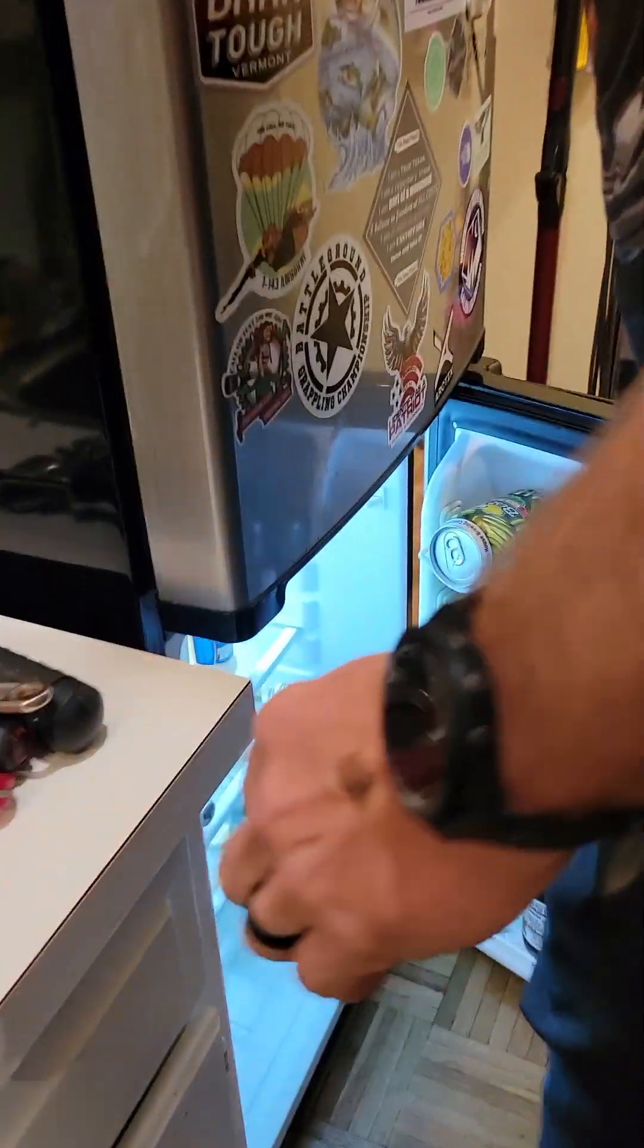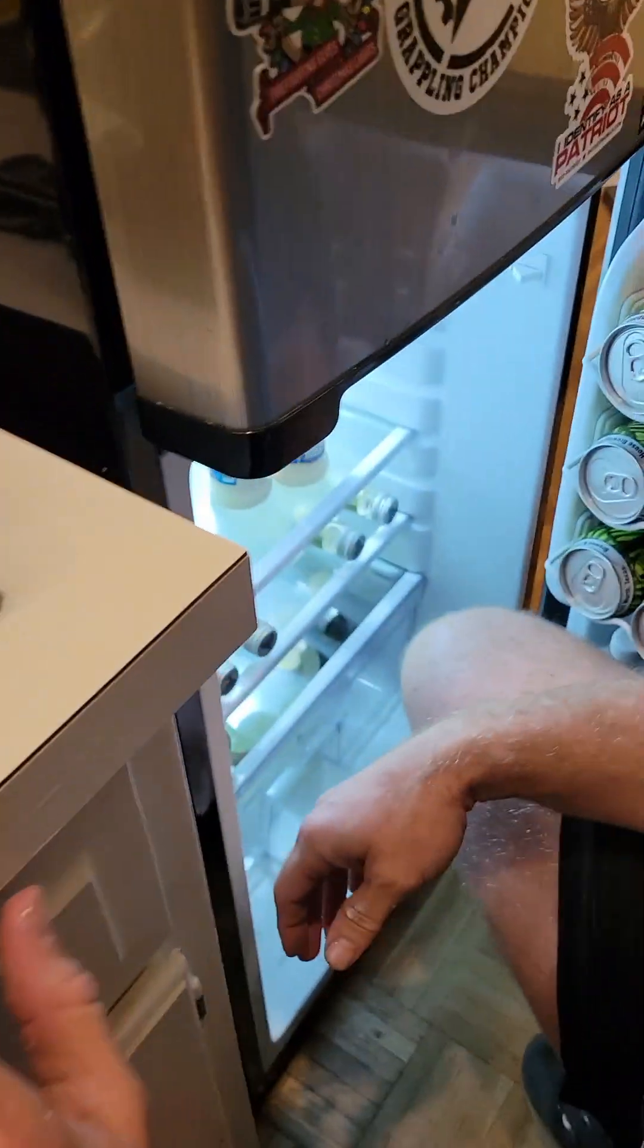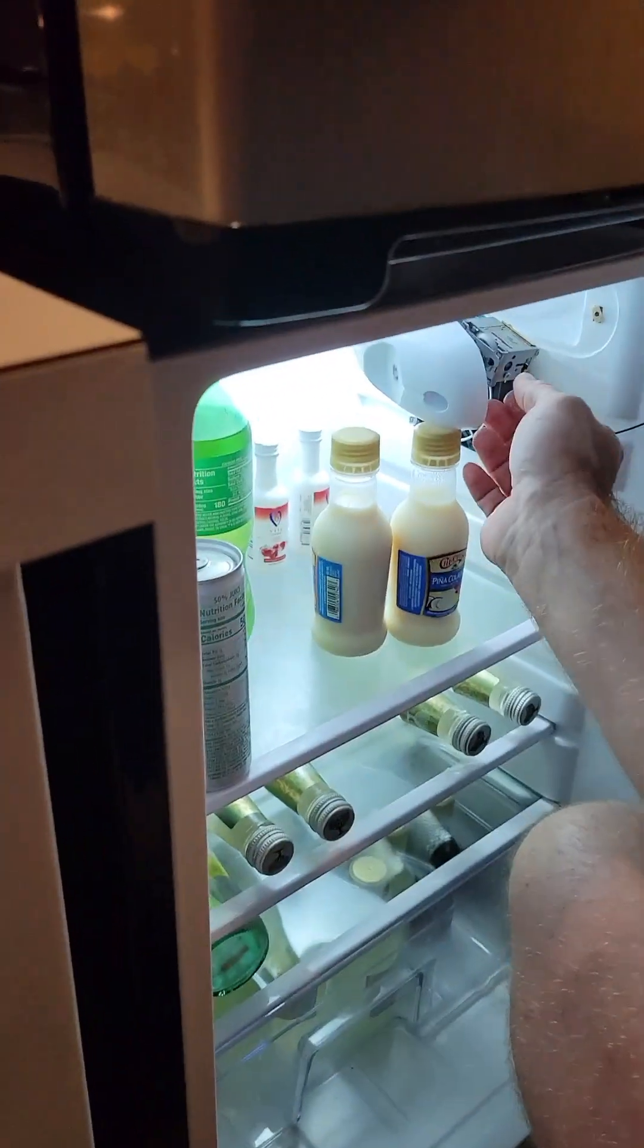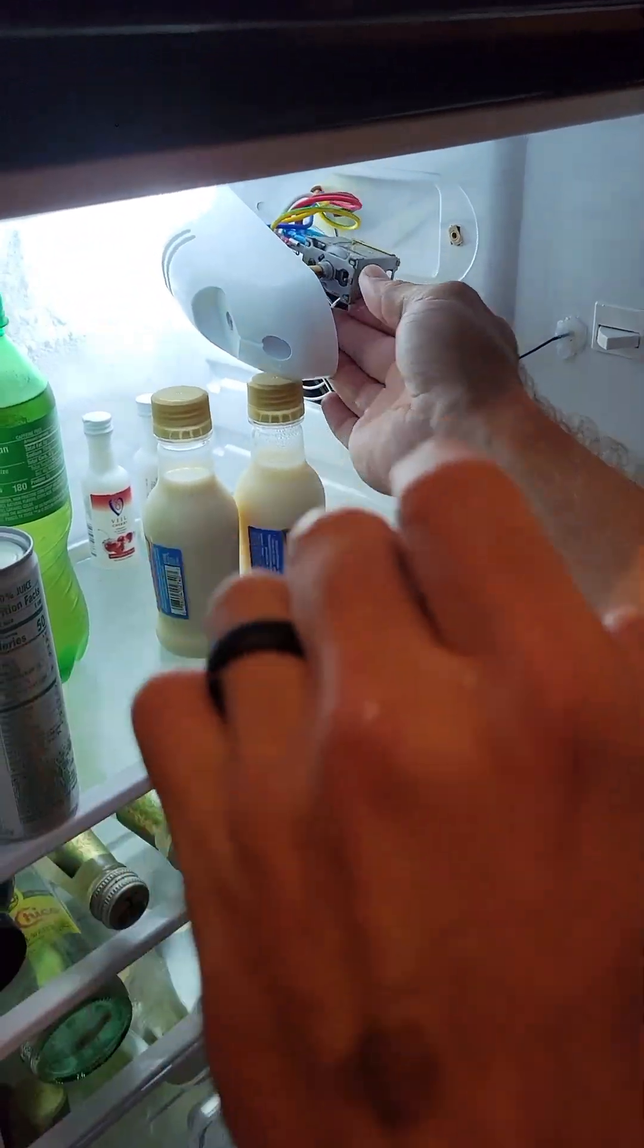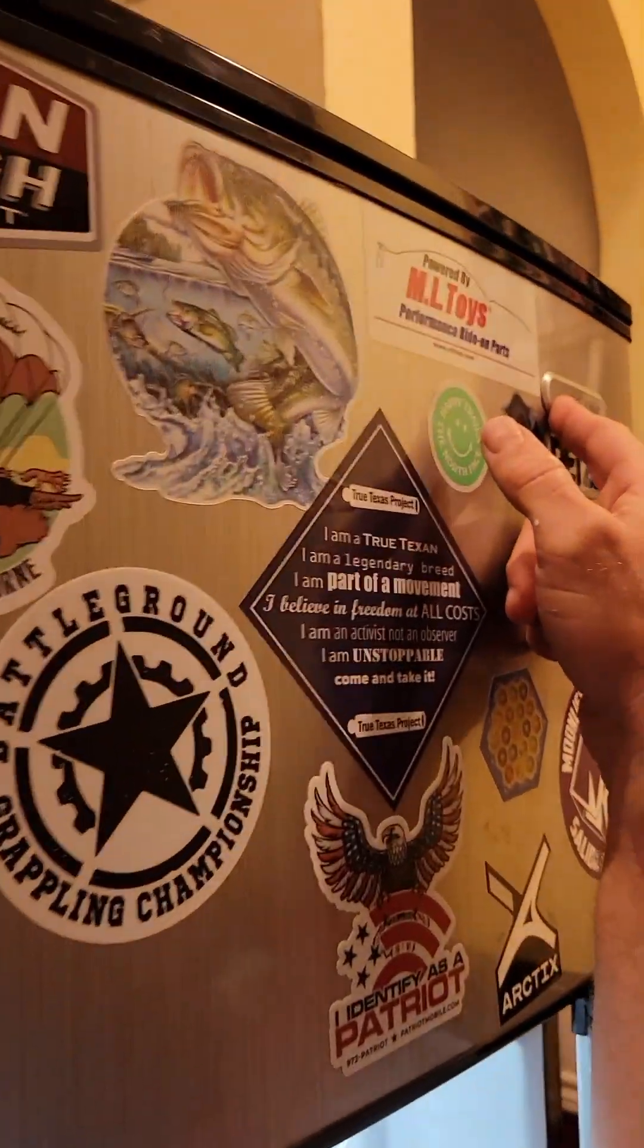Okay, so at the end of the last video, I said I would go into how this thermostat on the Visani 4.5 cubic foot mini fridge works.